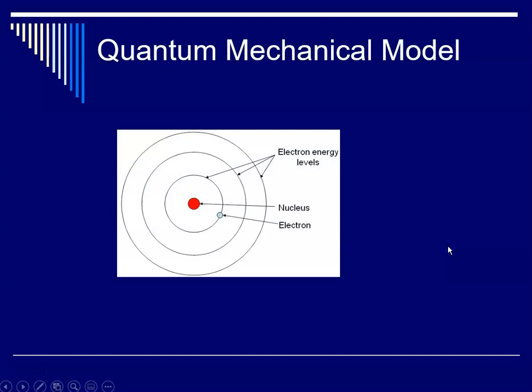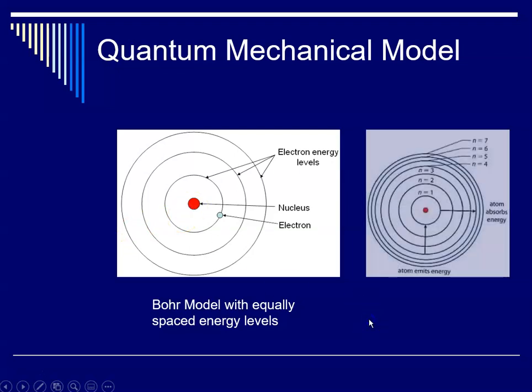One being the lowest energy, and seven being the highest. If you'll recall, the Bohr model of the atom, the planetary model, he proposed that the energy levels are equally spaced, like the rungs of a ladder as you move out from the nucleus. But the actual energy levels, as proposed by Schrodinger and measured, shows that the energy levels get closer together. So you can see as you move out from the nucleus, they're not equally spaced, and in fact, they get closer and closer together as you go from one through seven.